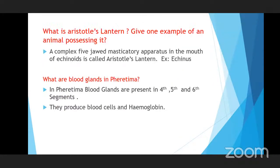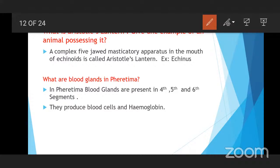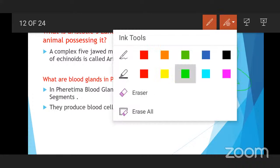What is Aristotle's lantern? Give one example. Looking at the mouth of the echinoids, we observe a jaw-like structure present in the oral surface. A complex five-jawed masticatory apparatus in the mouth of echinoids is called Aristotle's lantern. Aristotle introduced this concept, which is why the name Aristotle's lantern was given. Example: Echinus.